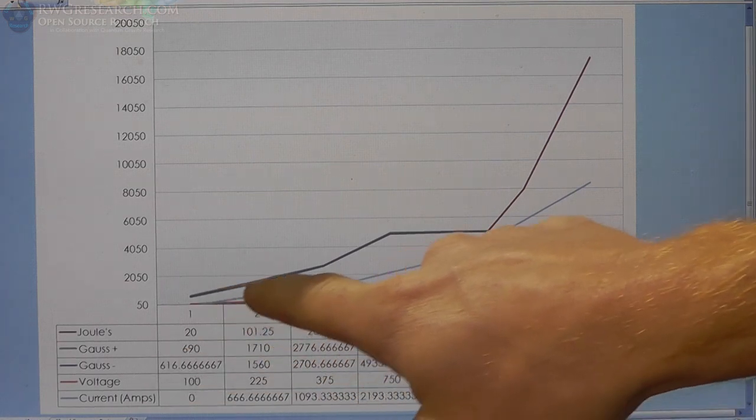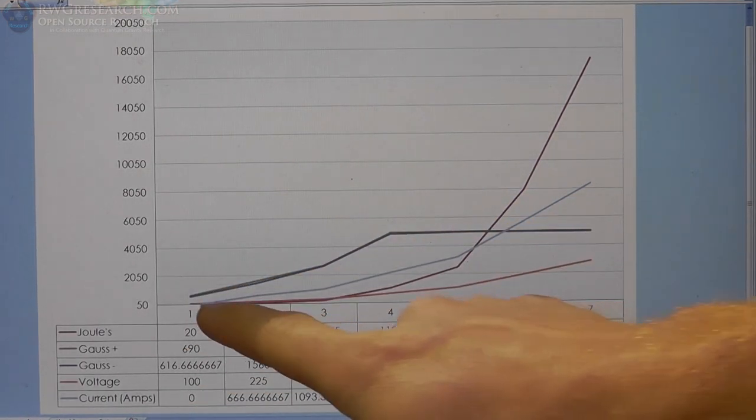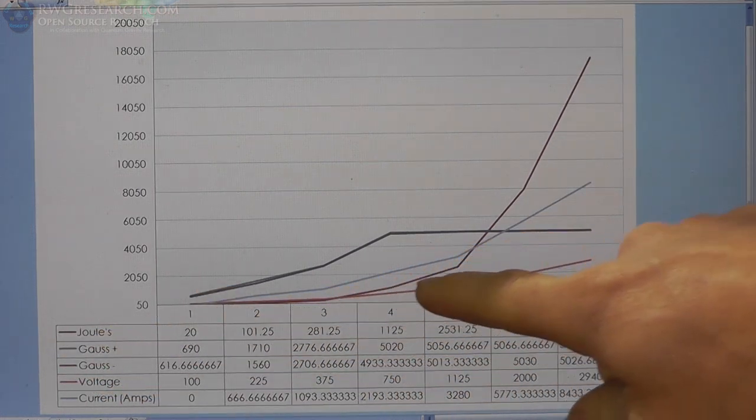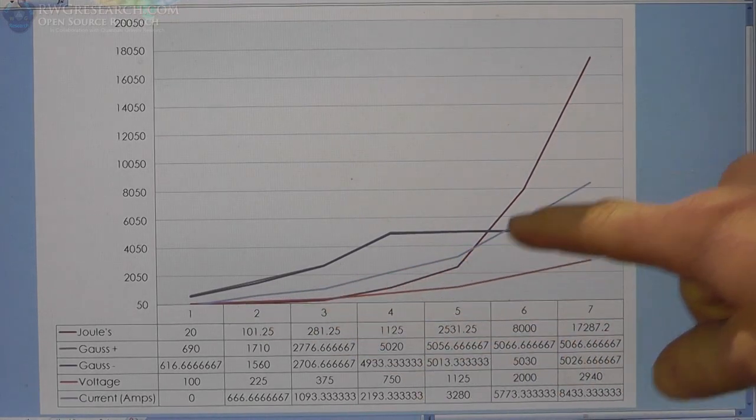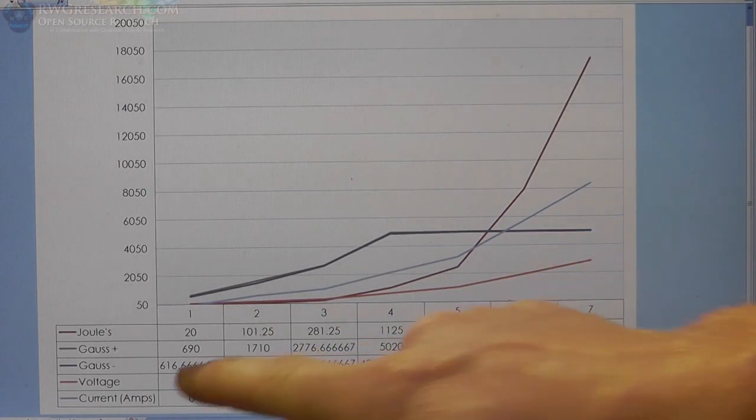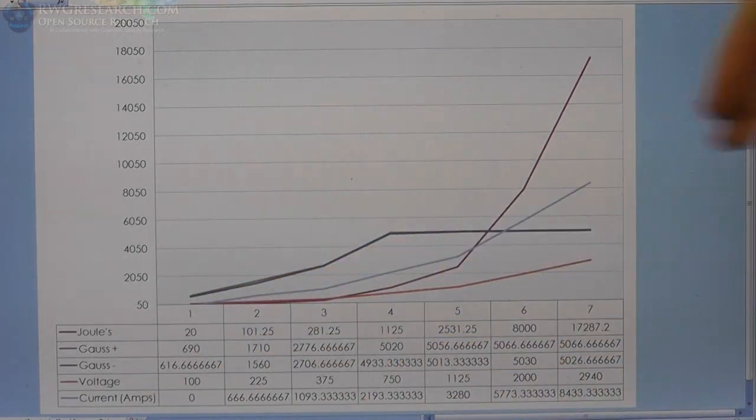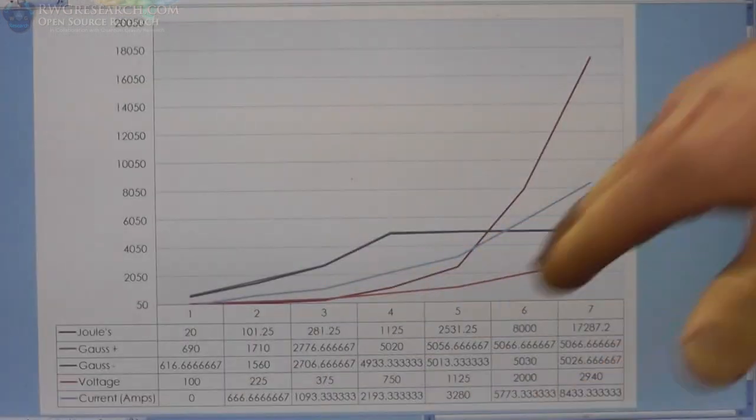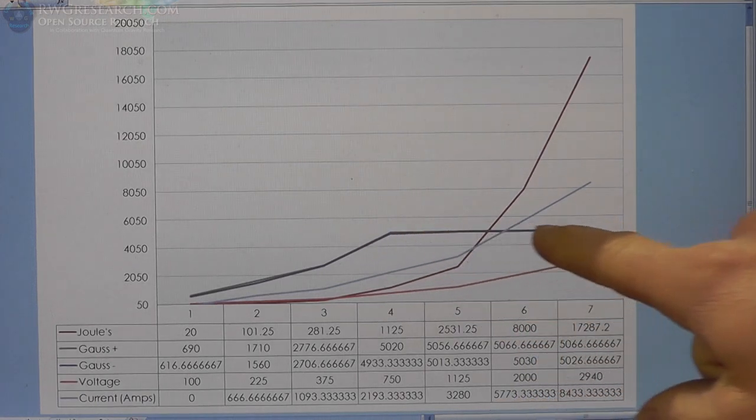So, the Gauss pretty much is on top of each other and you can barely even see it. Now, the purple here is the amount of joules, the amount of energy that I applied, or I had stored in the capacitors that I applied. And the current is an equal chart. But, look what happens to the Gauss reading.